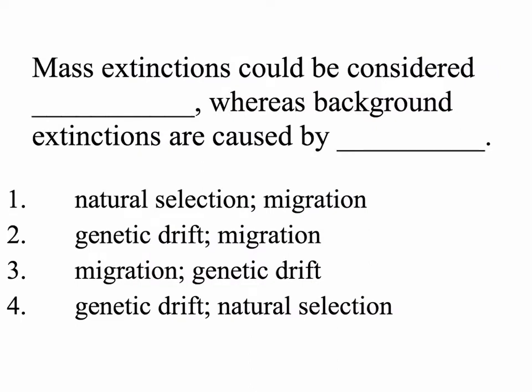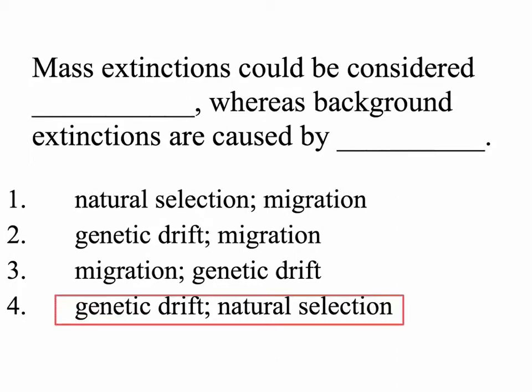Here's a practice question: Mass extinctions could be considered blank, whereas background extinctions are caused by blank. The correct answer is D: mass extinctions could be considered genetic drift, as random natural disasters cause bottleneck effects and wipe out organisms. Background extinctions are caused by natural selection.